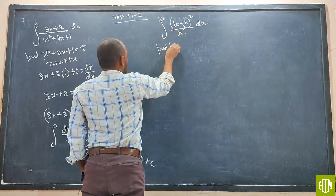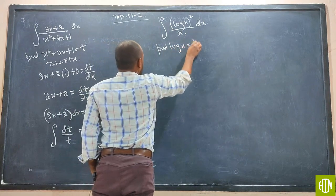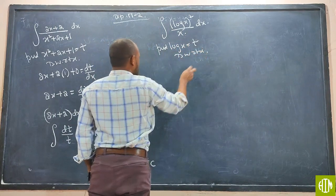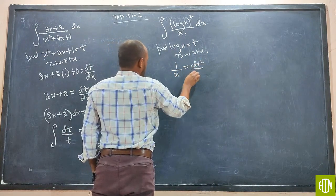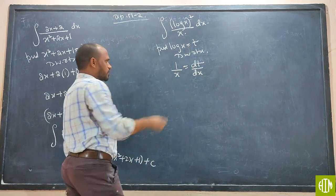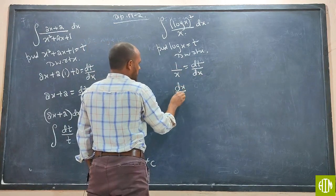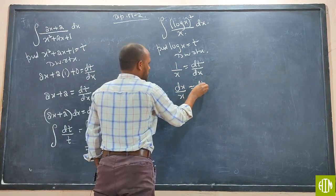Put log x is equal to t. Differentiate with respect to x. Log x, 1 by x, dt by dx. Now dx into 1, dx by x is equal to dt.